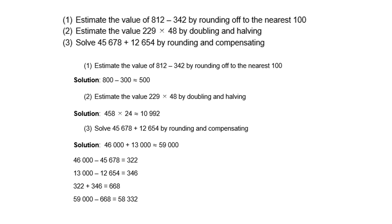Solve 45,678 plus 12,644 by rounding and compensation. We round 45,678 up to 46,000 and 12,644 up to 13,000, then add them to get 59,000. The difference from rounding: 46,000 minus 45,678 is 322, and 13,000 minus 12,644 is 356. Adding those differences gives 678, then subtracting from 59,000 gives an answer of 58,322.